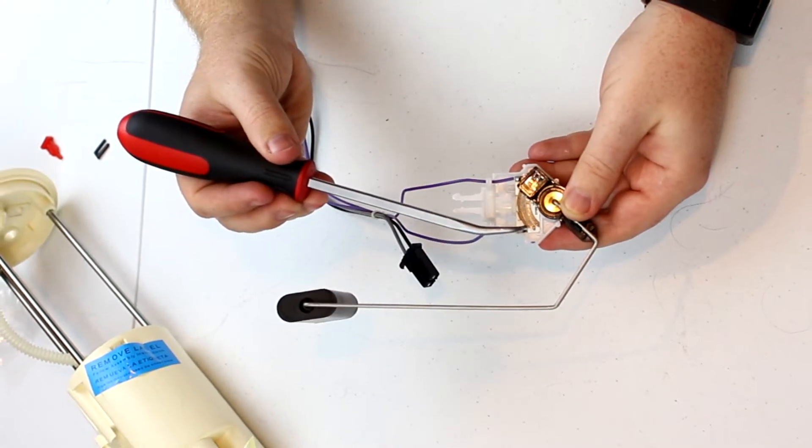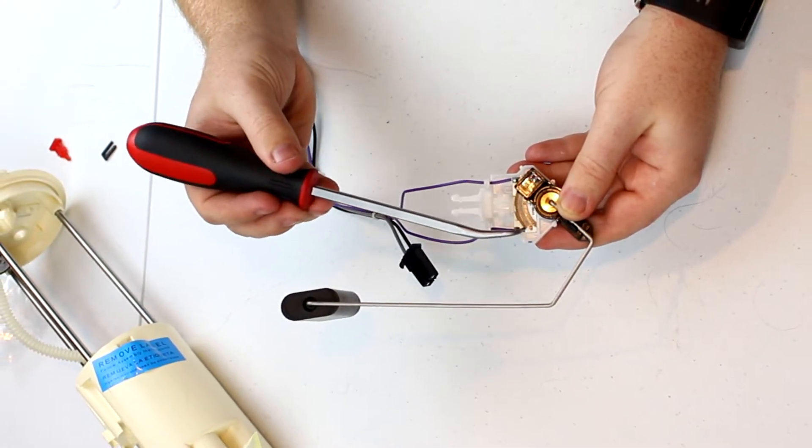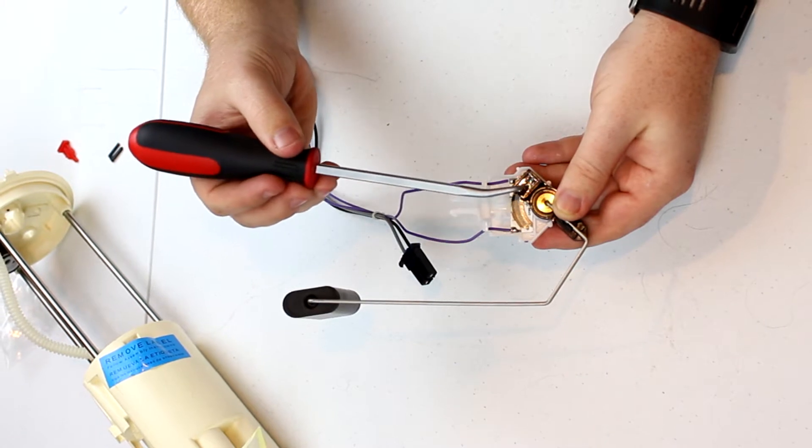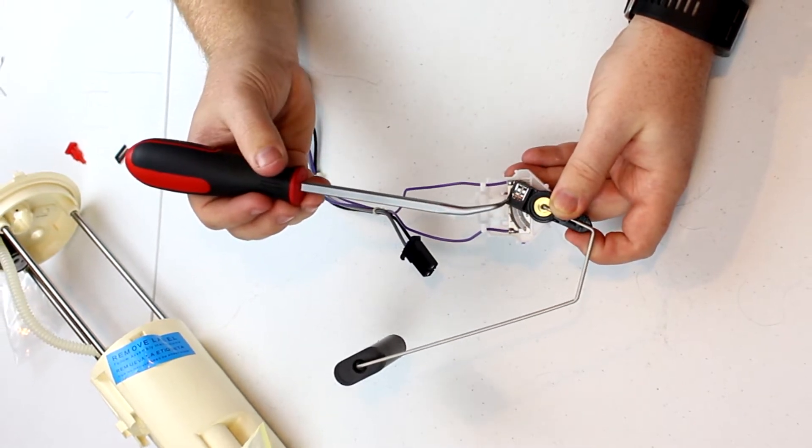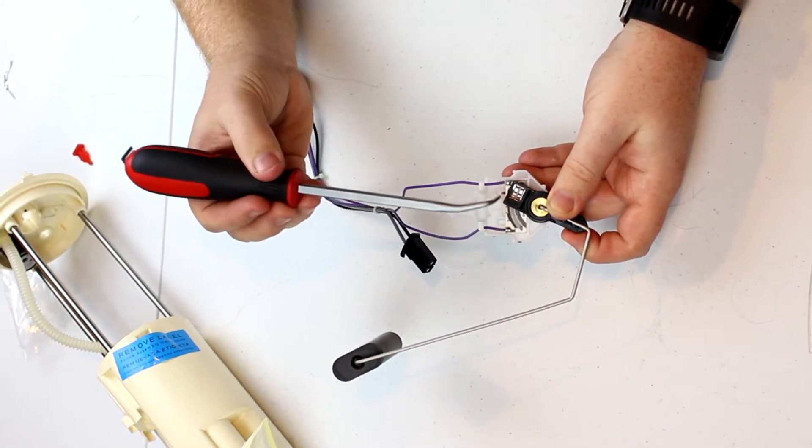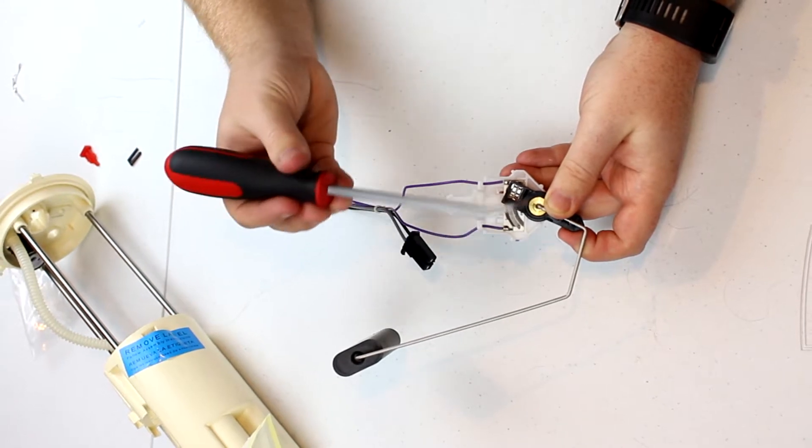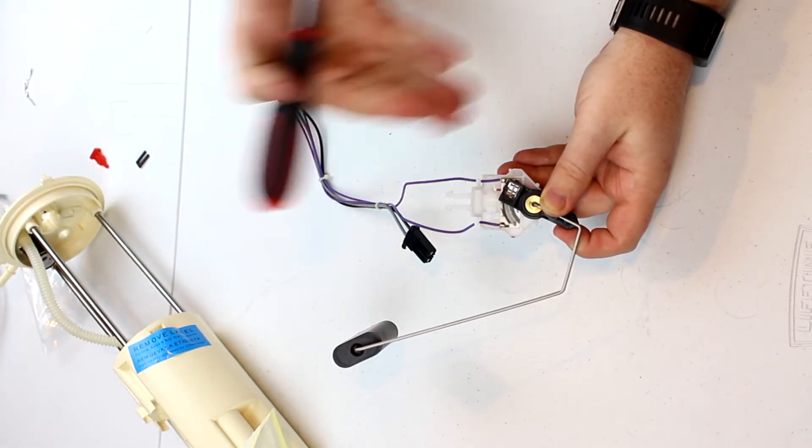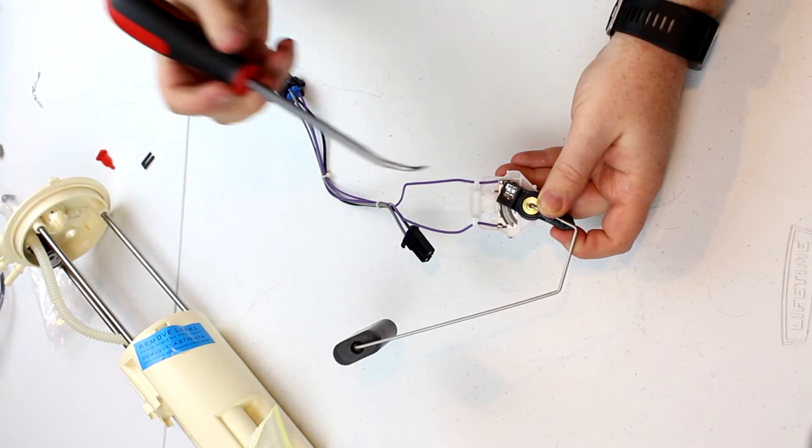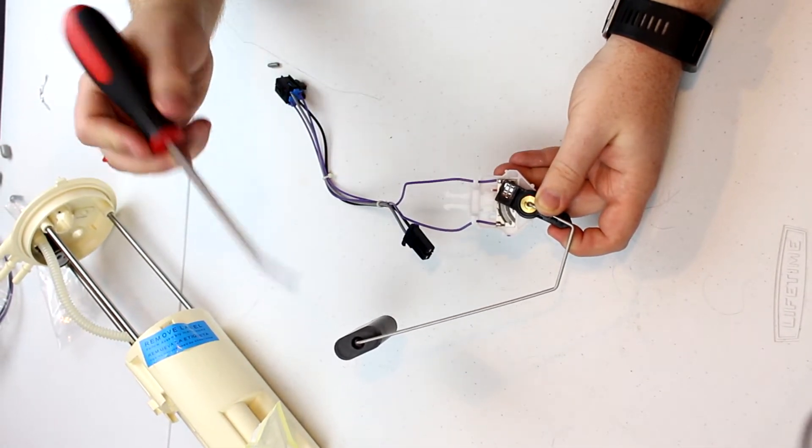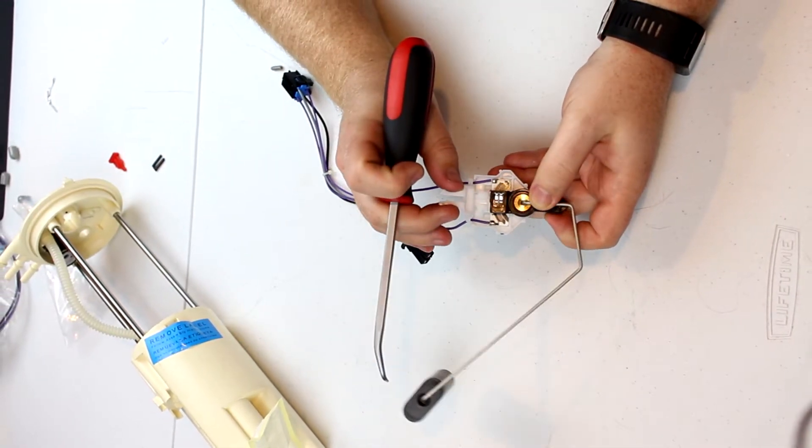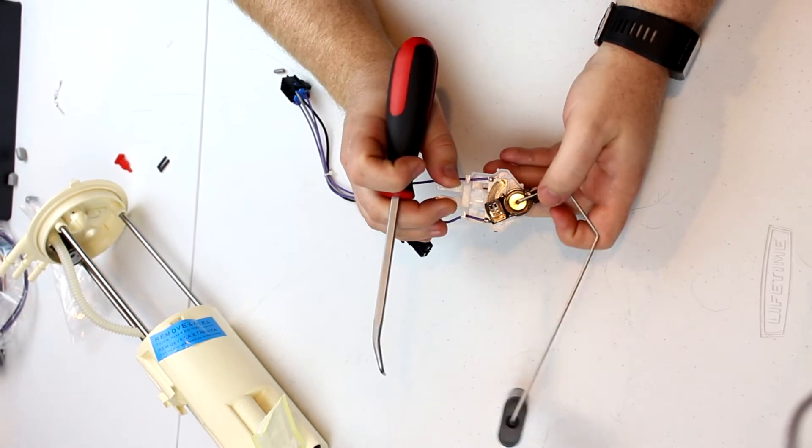One end of the power goes through here. It follows this resistor here down to wherever this happens to be. Let's say it's here. It's full. So there's a lot of resistance and it uses the amount of voltage heading back or the amount of power in general heading back to detect how much fuel is in the tank. And as this changes, so does the output.